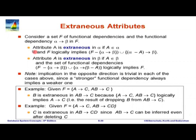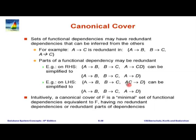Those are the steps in computing the canonical cover. There is material on extraneous attributes and how to determine if something is extraneous. The idea is to drop extraneous attributes using attribute closure. Take a dependency alpha determines beta, and take an attribute A in alpha. We can infer it is extraneous if F logically implies the stronger dependency — alpha minus A determines beta. The test is based on attribute closure.